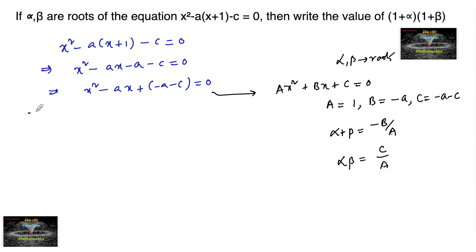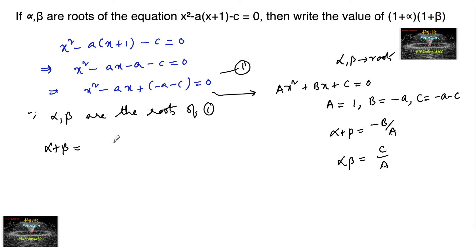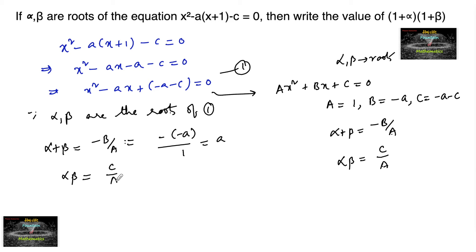Since alpha and beta are the roots of this equation, we have alpha + beta = -b/a = -(-a)/1 = a, and the product of the roots alpha·beta = c/a = (-a - c)/1 = -a - c.